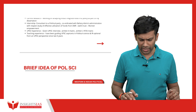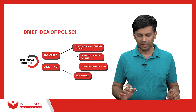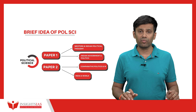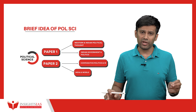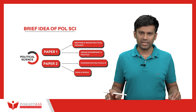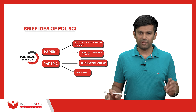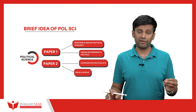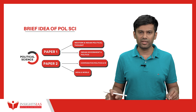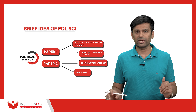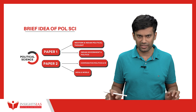Now, a brief idea about the optional subject. Political science, or any optional subject, comprises two papers, and each paper carries 250 marks. So the optional has a weightage of 500 marks. The optional plays a very key role in ensuring that you get a good rank in the exam.